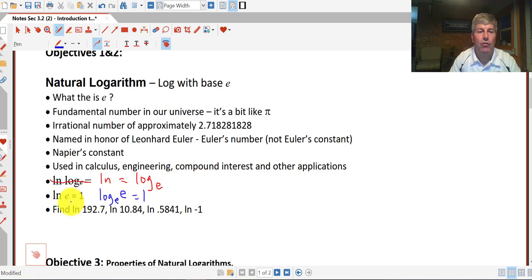The natural log of e is 1. You'll want to memorize that and recognize that. When we say the natural log of e is 1, what we're saying is log base e of e is 1. In other words, what's the exponent on e that gets an answer of e? Remember, natural log is log base e.